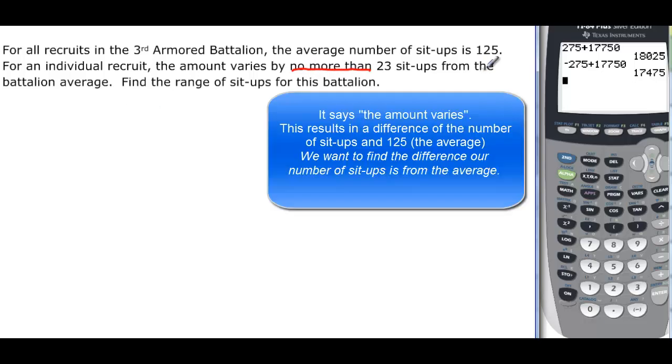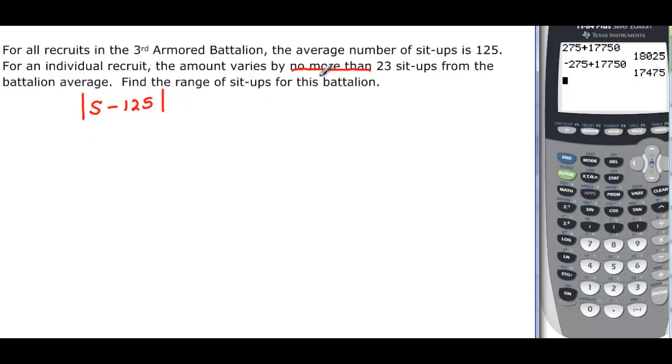We know there's a difference of about 23, and that difference is the number of sit-ups and the 125, which is the average. So we're going to make that the absolute value. No more than means it can be less than but not greater than.